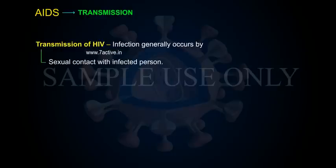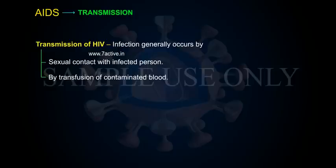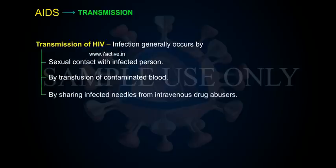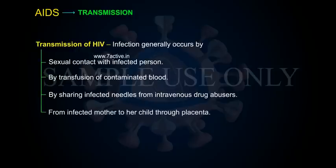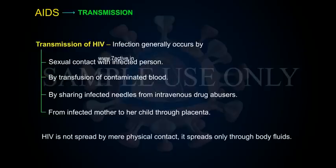Transmission of HIV infection generally occurs by sexual contact with an infected person, by transfusion of contaminated blood, by sharing infected needles from intravenous drug abusers, from an infected mother to her child through the placenta. HIV is not spread by mere physical contact — it spreads only through body fluids.